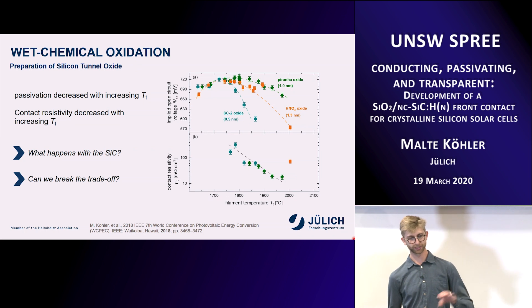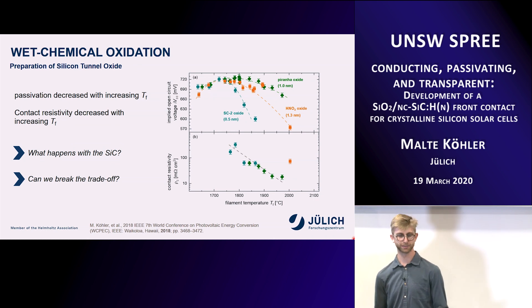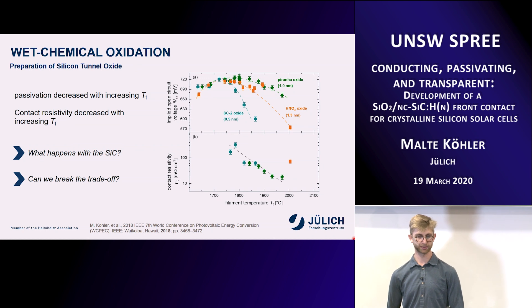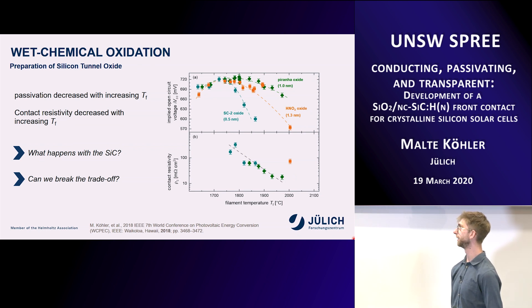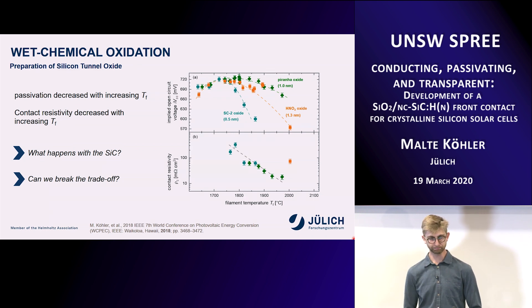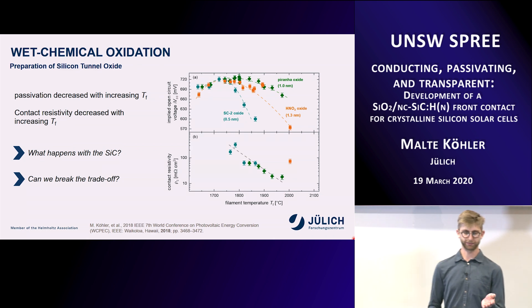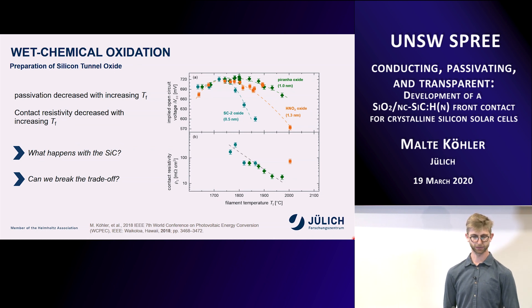We also saw that contact resistivity decreases even though the thinnest oxide has the highest contact resistivity. So the filament temperature has a large influence on contact resistivity, rather than oxide thickness alone — except for HNO₃. All points not shown here were non-ohmic and couldn't be evaluated. The key question arising is: what happens to the silicon carbide when we change the filament temperature? We want a filament temperature around 1800°C for high VOC, but on the other hand we want high filament temperatures for low contact resistivity. Can we somehow break this trade-off?